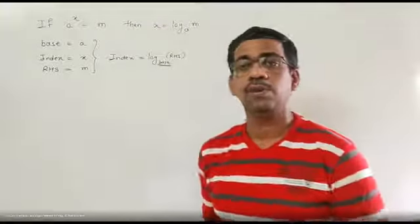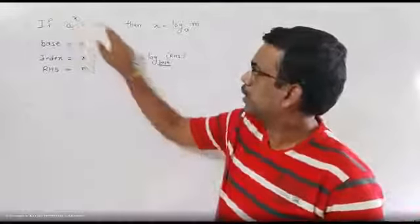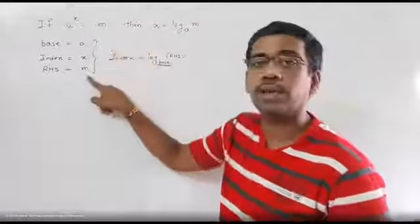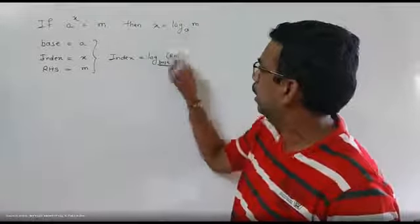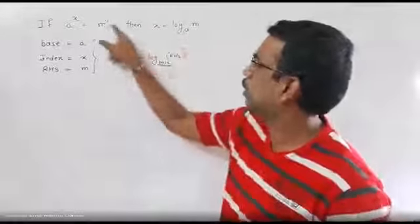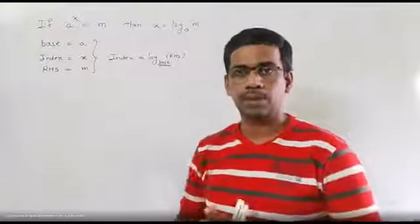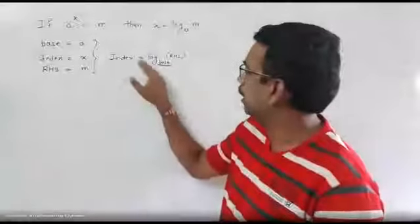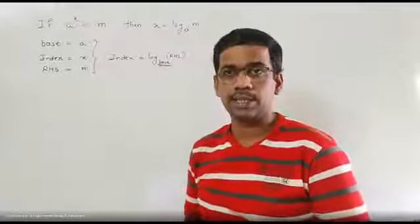I will repeat the questions and solutions. So, if a raise to x is equal to m, a is called the base, x is called the index and m is called the right-hand side. Then, x is equal to log m to base a. The index is equal to log of the right-hand side to the base. And if it is required, we can reverse it and express it in this format.